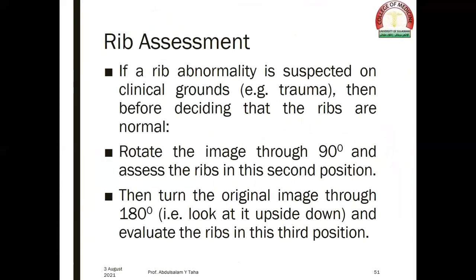Rib assessment: if a rib abnormality is suspected on clinical grounds — for example following trauma — then before deciding the ribs are normal, we have to rotate the image through 90 degrees and assess the ribs in this position, then turn the original image through 180 degrees — that is, look at it upside down — and evaluate the ribs in the new position before commenting that there is no rib fracture.